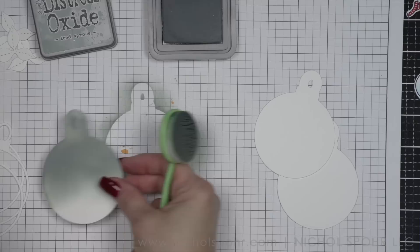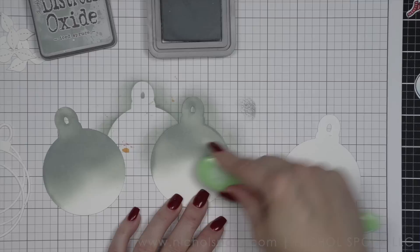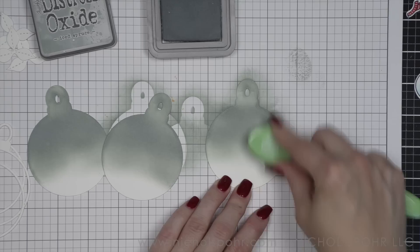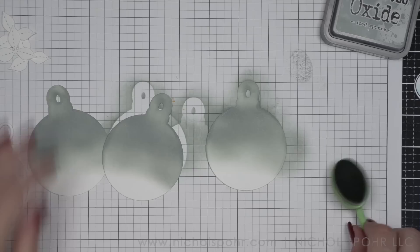This is not a new distress color at all, but it is the color I have found myself reaching for over and over. I absolutely love it for a snowy background. I'm going to ink up most of the ornament. I'm going to leave the bottom edge white to kind of give it the look of a snowy sky. And this is the snow on the ground.